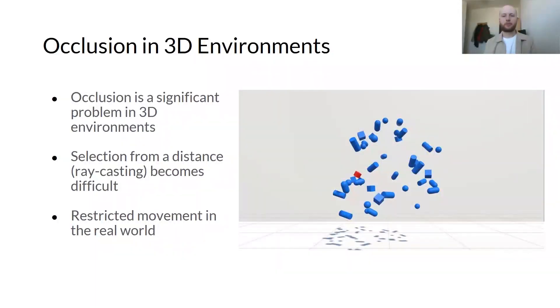Occlusion presents a principal problem for selection in 3D environments, as it reduces the target area for pointing and increases selection ambiguity. Users can change their position to improve the view they have of a target, however this is a limited option when movement is restricted, such as when sitting or if the tracking space is limited.